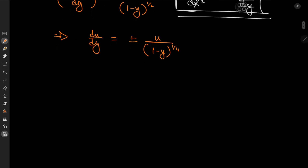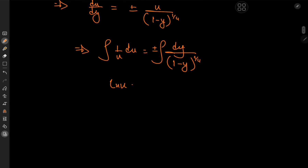This makes it a separable differential equation. We have (1/u) du equal to dy / (1 minus y)^(1/4), and we have this traveling ± sign. Integrating yields log u on the left equal to ∓(4/3)(1 minus y)^(3/4), plus a constant of integration which I'll introduce as negative a.